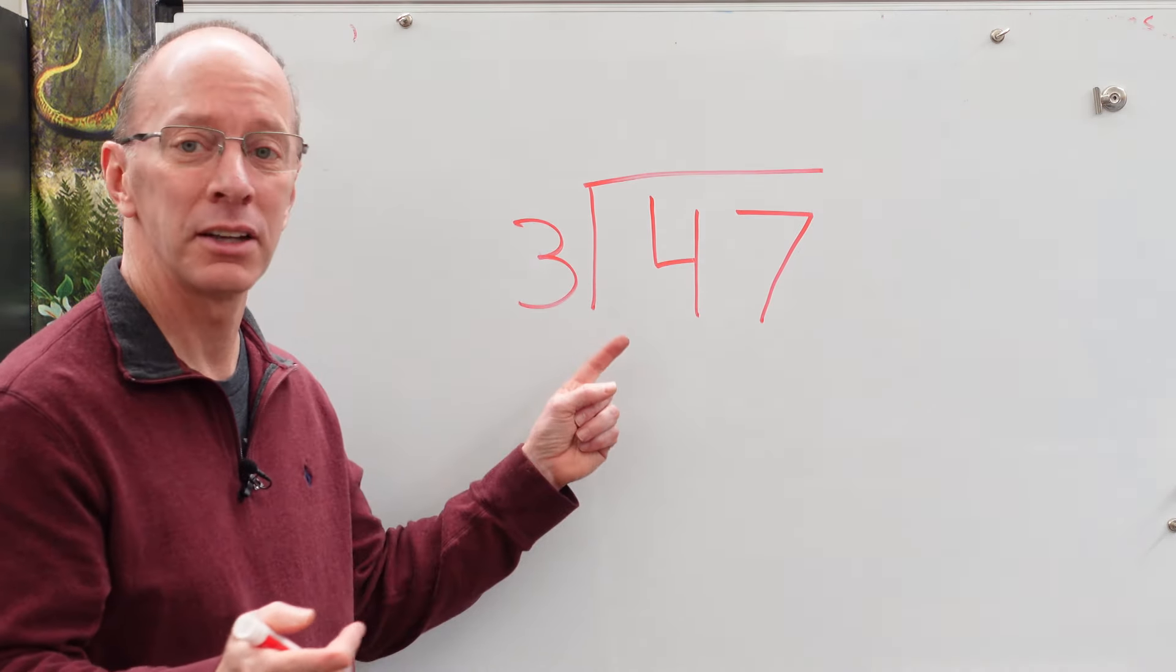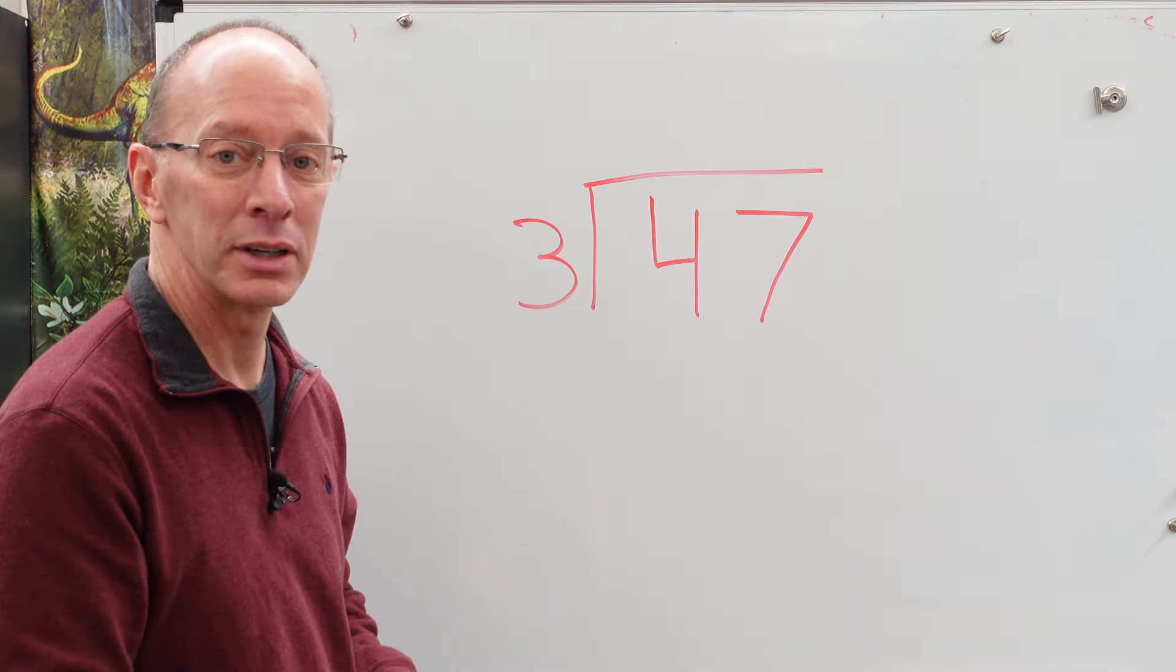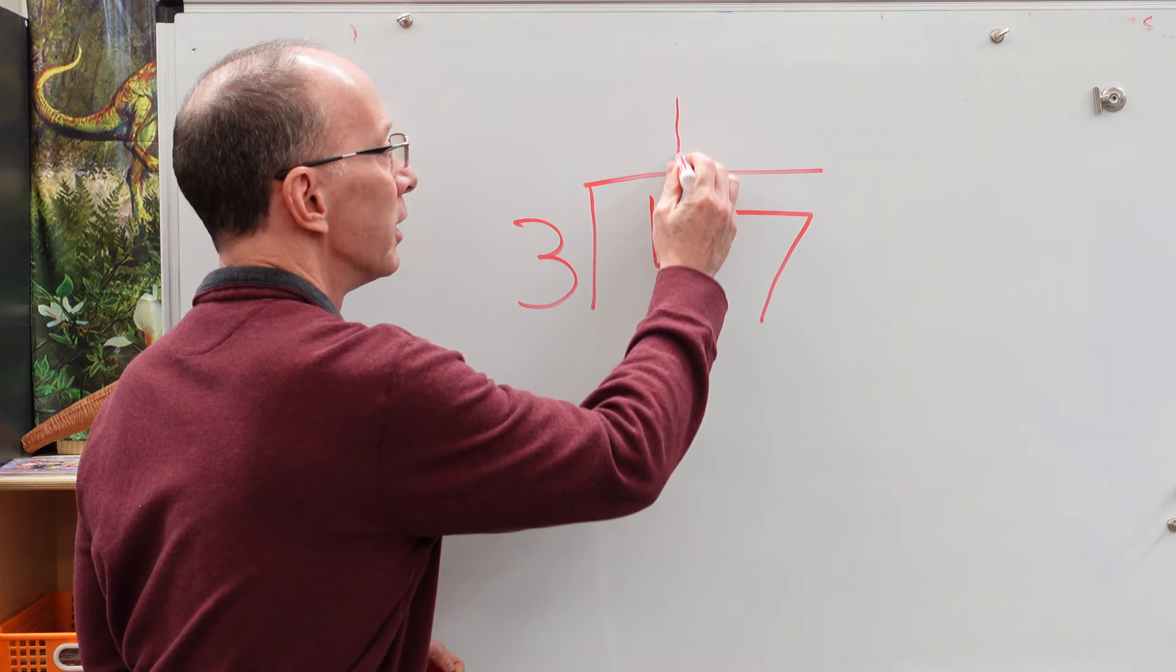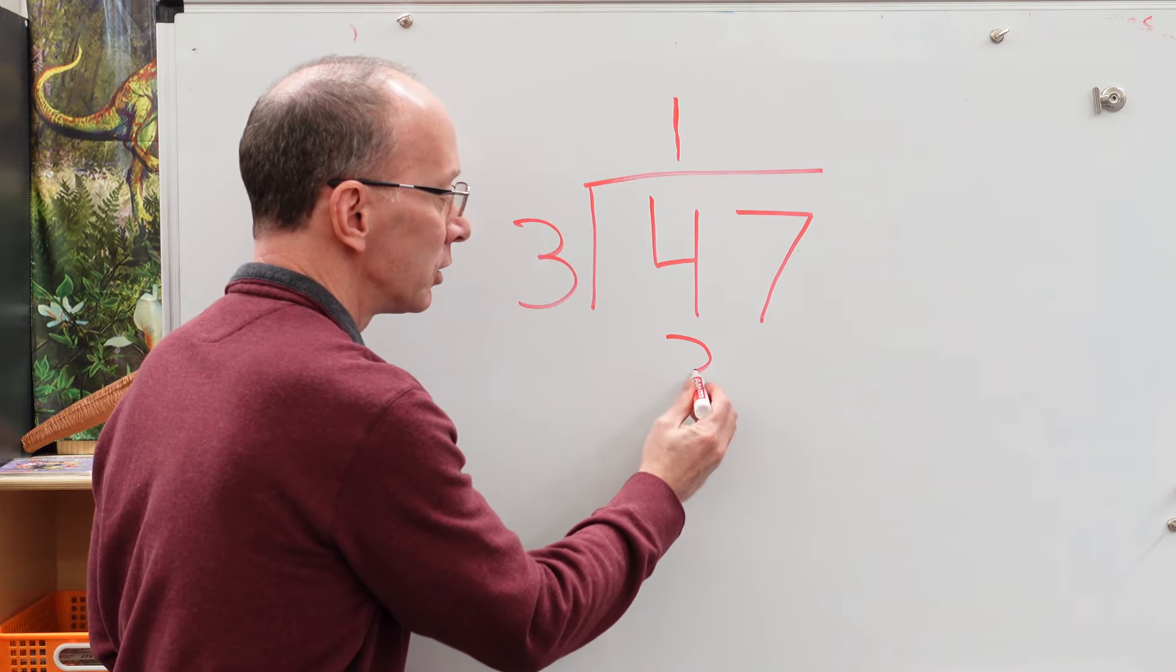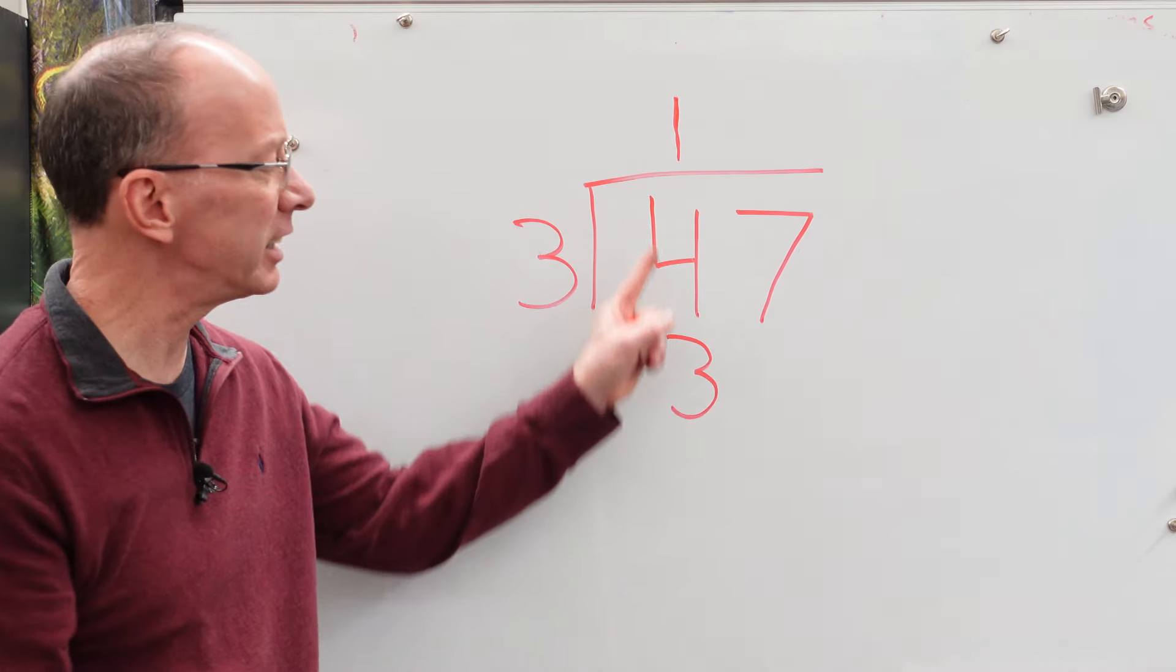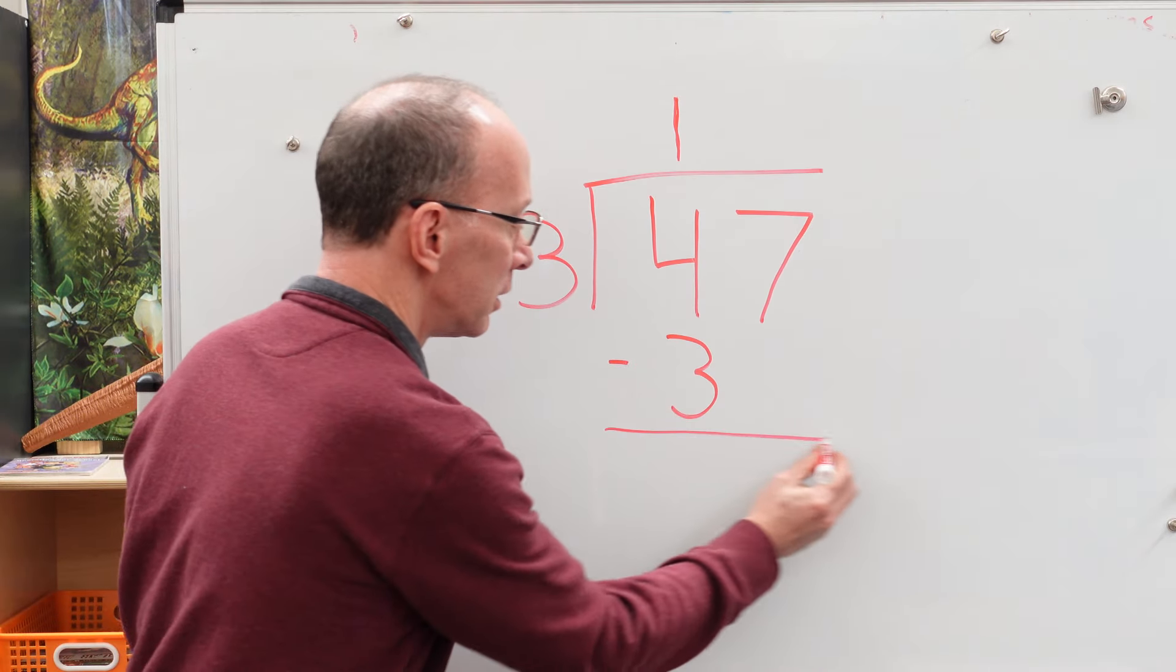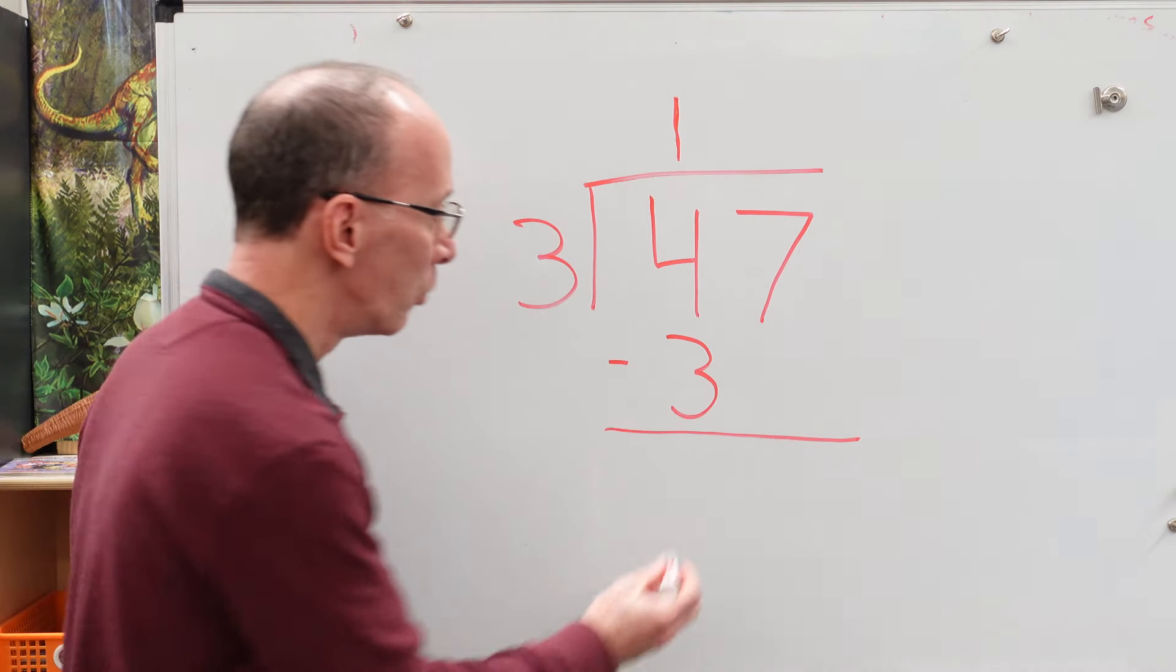Three times one is three. Three times two is six. Whoa, too much. We got to do three times one. So let's try it out. We put the one right here. One times three equals three. So you want to put that three exactly underneath this number right here. And you're going to use subtraction. So four minus three equals, all right, one.